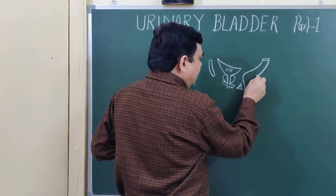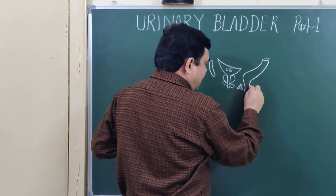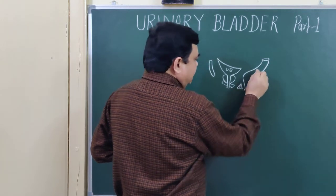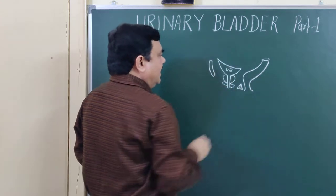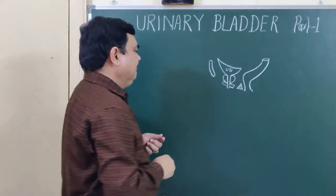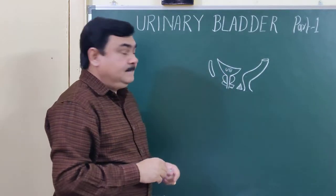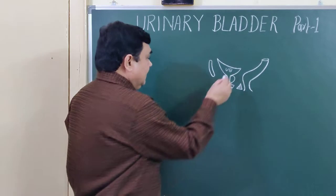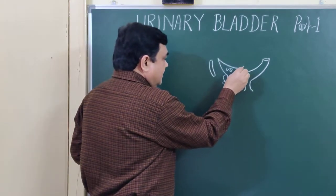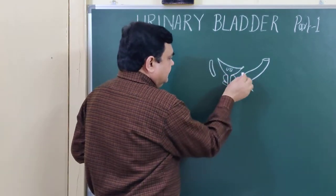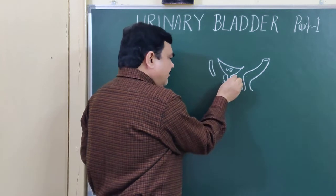This is the rectum. This is the anal canal. This is the ampulla of the rectum. So this is the urinary bladder. Here is the ureter — here is the position of the ureter.